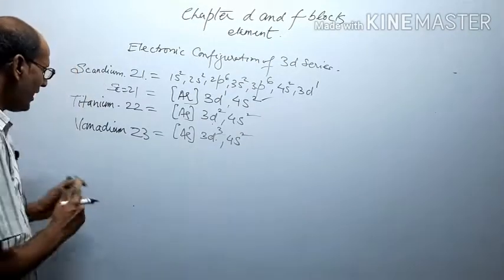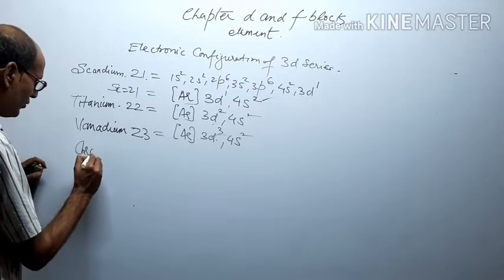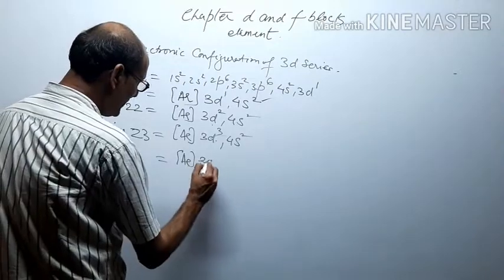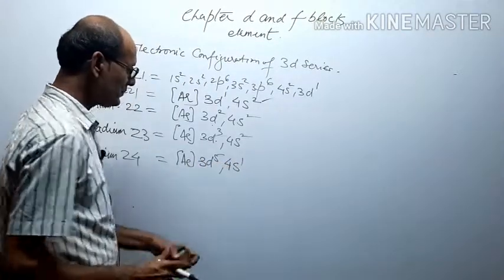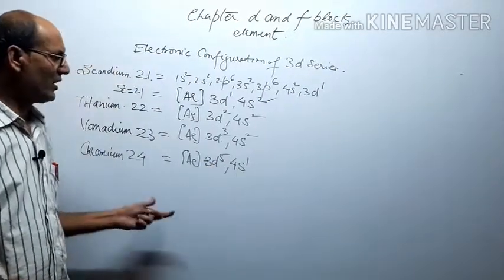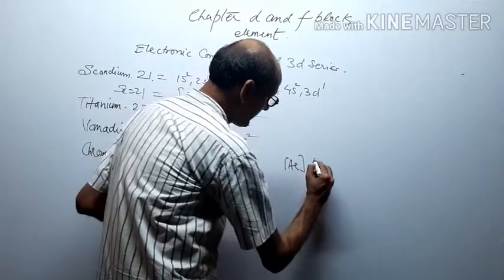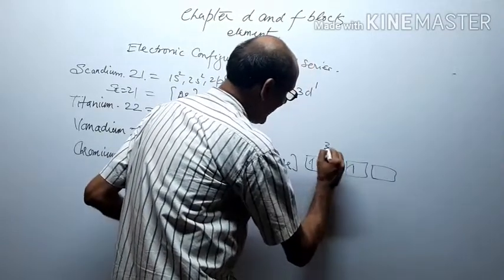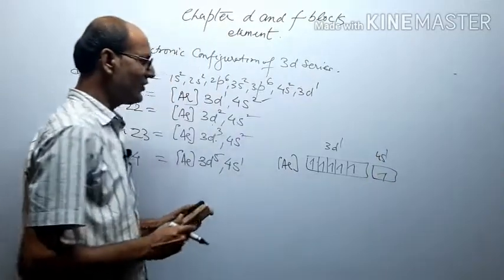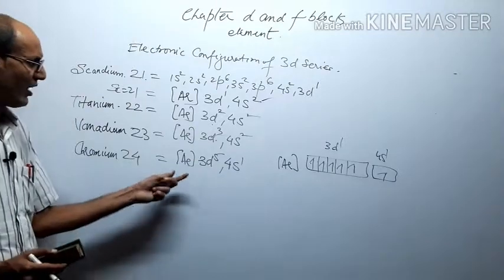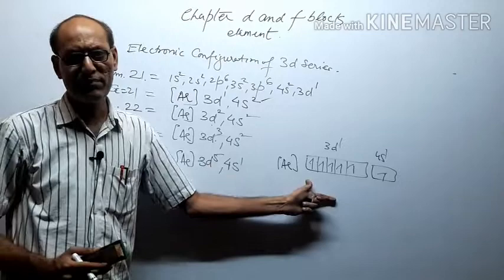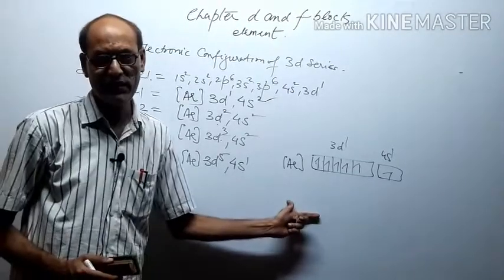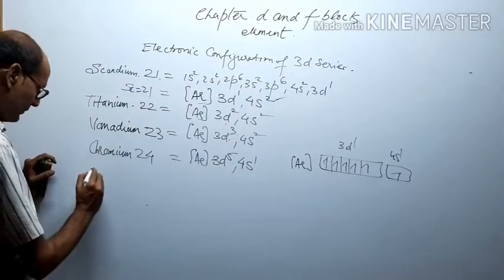Chromium is the most important special case. Chromium (24): the correct configuration is [Ar] 3d⁵ 4s¹ — we should not write 3d⁴ 4s². Drawing the orbital diagram: five 3d orbitals each with one electron plus one electron in 4s gives six unpaired electrons total. The larger the number of unpaired electrons, the harder the metal — chromium is the hardest element in the 3d series and has the maximum melting point.